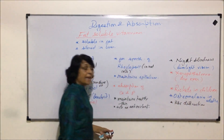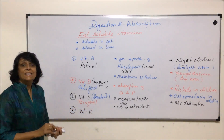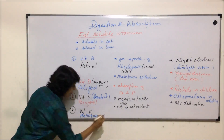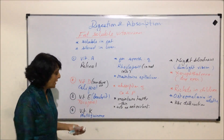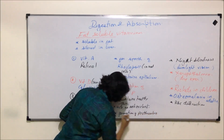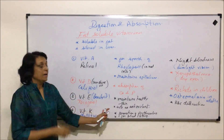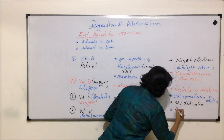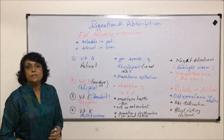The last of the fat-soluble vitamins is vitamin K. Its technical name is phyloquinone. Its main function is that it helps in the formation of prothrombin and is required for blood clotting. If vitamin K is deficient, blood clotting will be delayed, as the clotting protein is not synthesized in sufficient quantity.